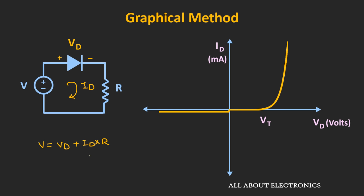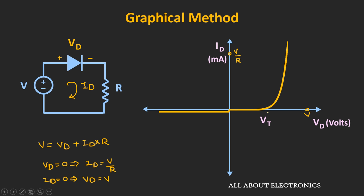If you look at this equation, we have two variables: the voltage across the diode Vd and the current through the diode Id. From this expression, we can find a line on the Id vs Vd curve giving us different possible values of Vd and Id. For example, if we put Vd = 0, we get the extreme value of Id equal to V/R — one point on the y-axis. Similarly, if we put Id = 0, we get one point on the horizontal axis where Vd = V. By connecting these two points, we get the load line for the given circuit.